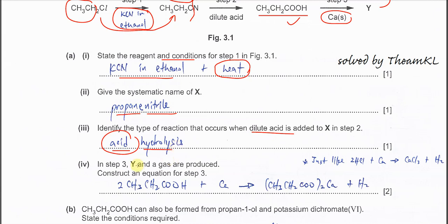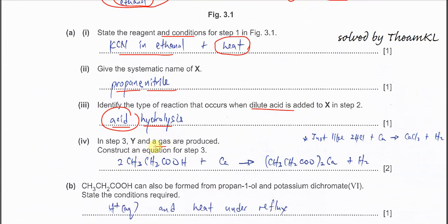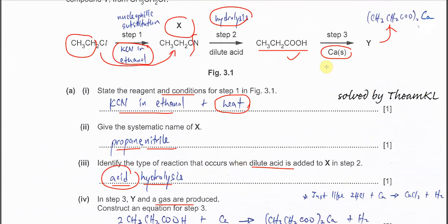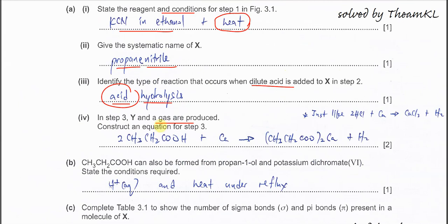Step 3, Y and a gas are produced. Construct an equation. This one is very easy. Whenever there is a metal with the acid, it will form salt and H2. So the propanoic acid with calcium will form this calcium propanoate with H2 gas. This is what you need to construct.